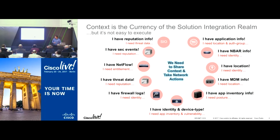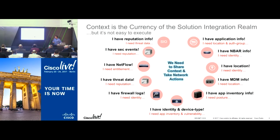There are systems that can give us information — like ISE, which gives you information on the AAA aspects, the RADIUS aspects. We have information from partners like MDM vendors that give you information about the mobile endpoints. We have firewalls and threat defense vendors that can consume this information, and likewise.